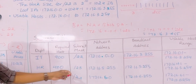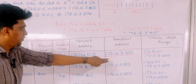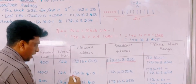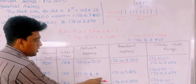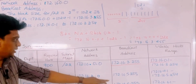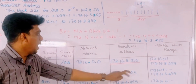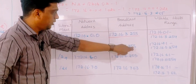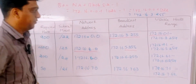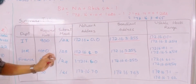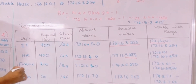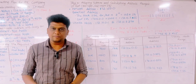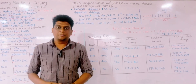For HR, the broadcast address of IT was 172.16.3.255, so HR starts at 172.16.4.0 with subnet /23. The broadcast address is found by adding 511 (block size 512 minus 1) to 172.16.4.0; converting 511 to binary gives 5.255, so the broadcast address is 172.16.5.255. Finance and Sales follow the same procedure for their respective subnets.